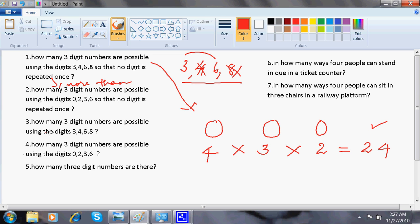How many three digit numbers are possible using the digits 3, 4, 6, 8. If he is not saying that the digit is not repeated more than once, then what I can do. I am bothering question number three now. Anything can come here. Any four can come here.